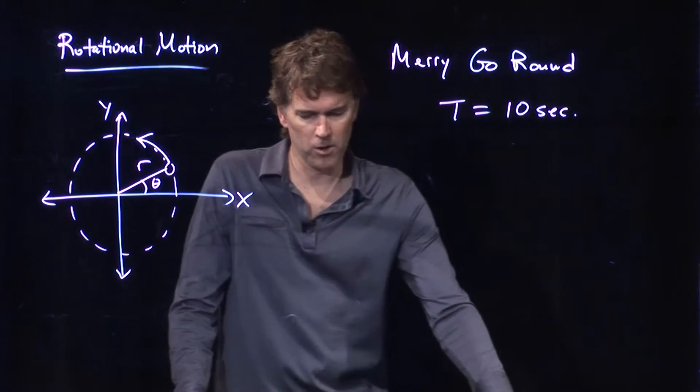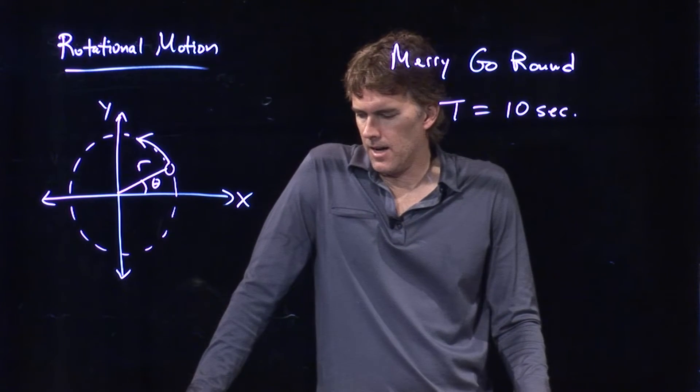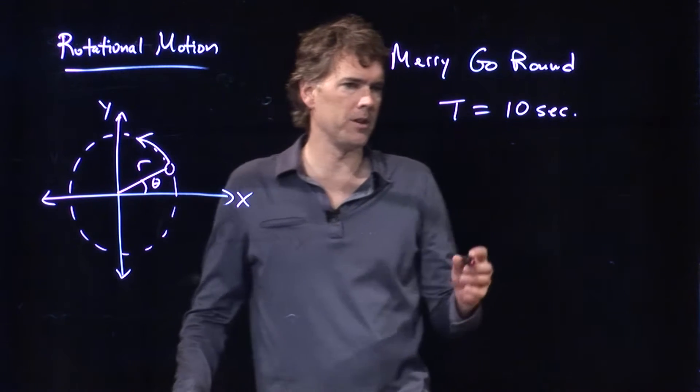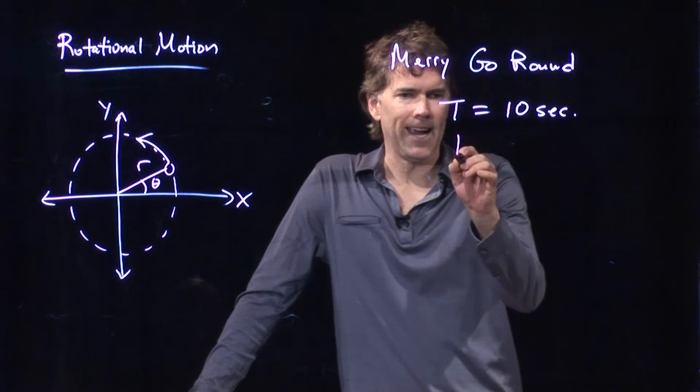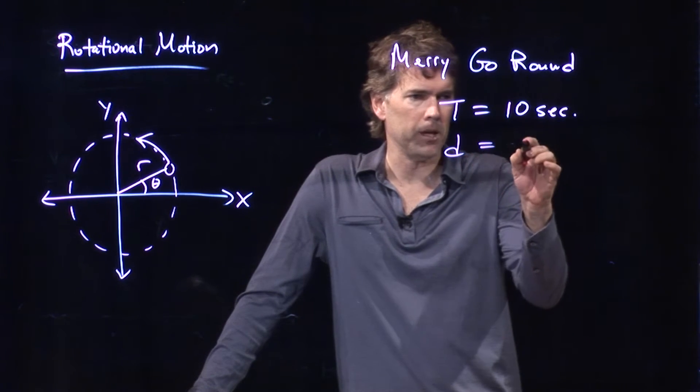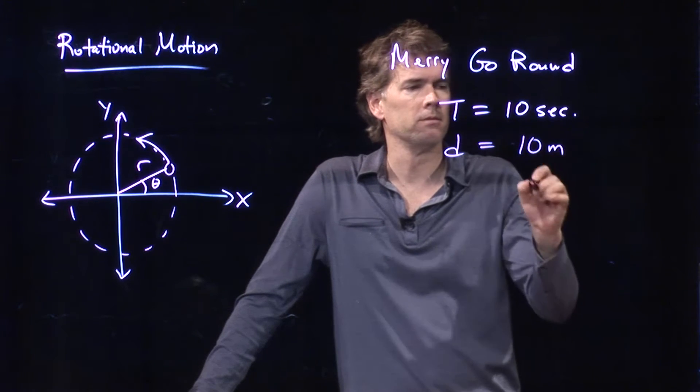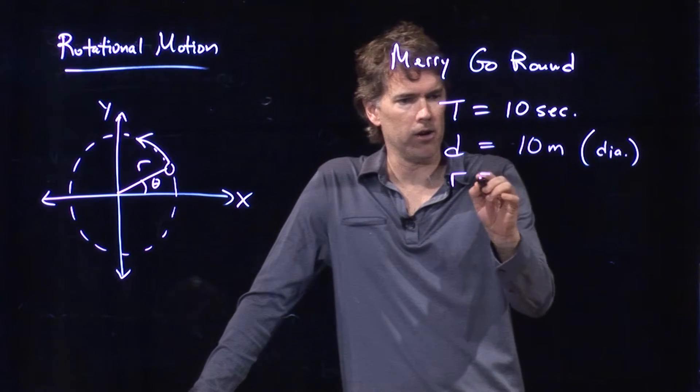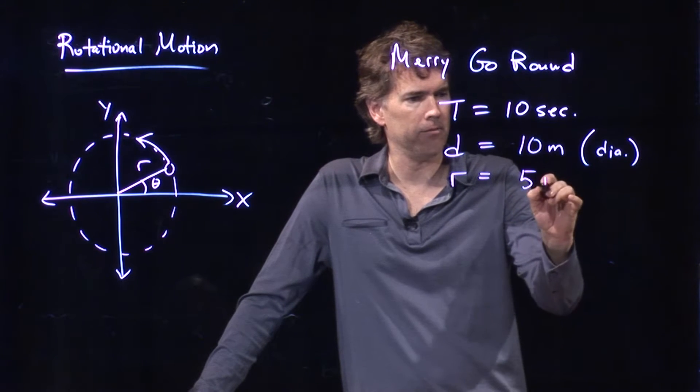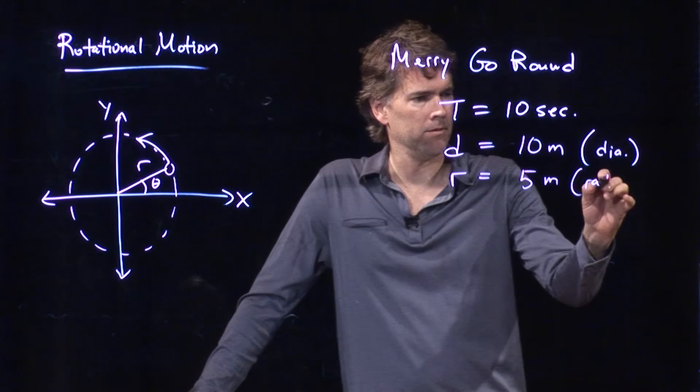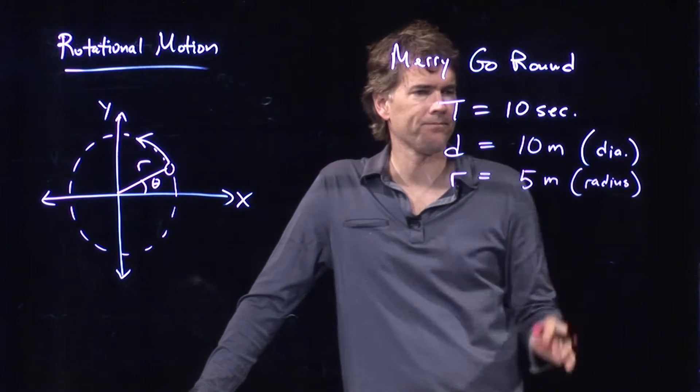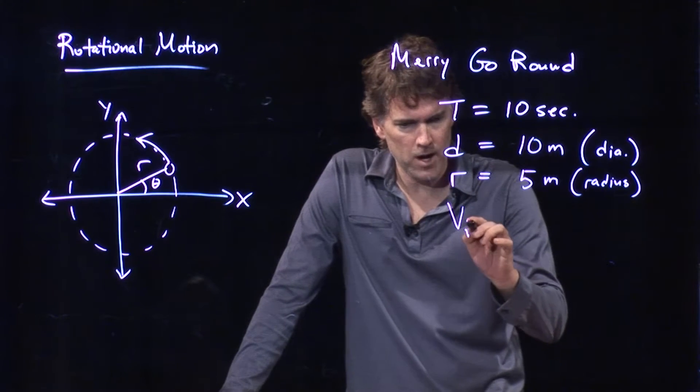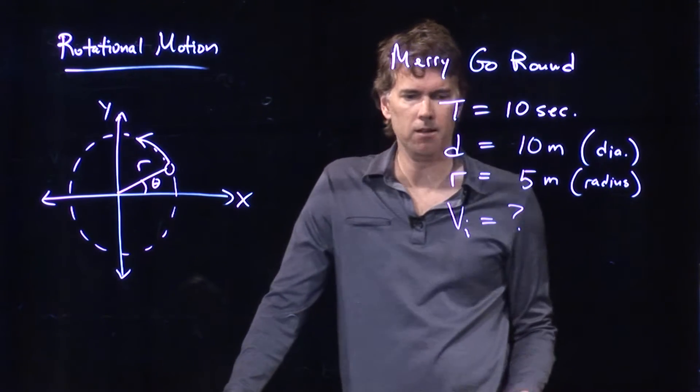10 seconds to go around once, and a merry-go-round can be pretty big, right? Certainly the ones at Disneyland are rather large. They probably have a diameter of maybe 10 meters. This is the diameter. If that's the diameter, then r is, of course, 5 meters, the radius. And now let's calculate the following. Let's figure out what our initial speed is.